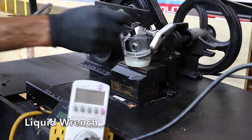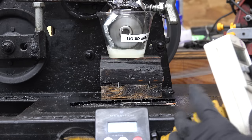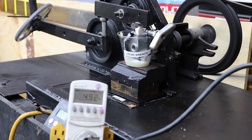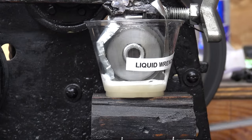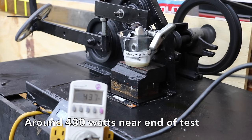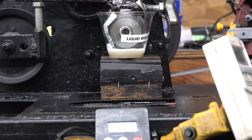Once a rusty fastener is broken free, the penetrating oil needs to be able to provide enough lubrication to allow the rusty fastener to move without galling the threads. The lubricity test will provide some great information on film strength or the ability of these products to prevent friction or metal on metal contact.